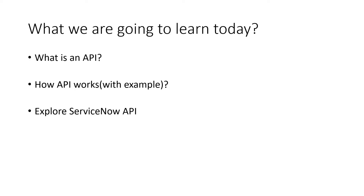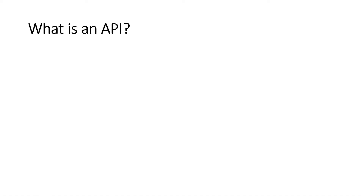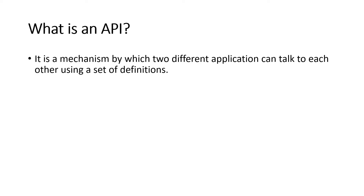Then we'll explore ServiceNow APIs — what types of ServiceNow APIs we have — and then we'll cover client-side API and server-side API. Make sure you watch the full video and understand each concept. This is a series, so watch all the videos step by step, and for any questions ask me in the comment section. So, what is an API? API stands for Application Programming Interface, and it is a mechanism by which two different applications can talk to each other using a set of definitions.